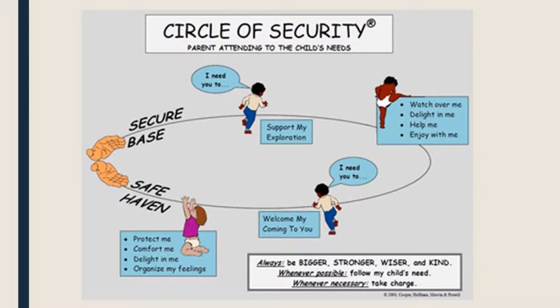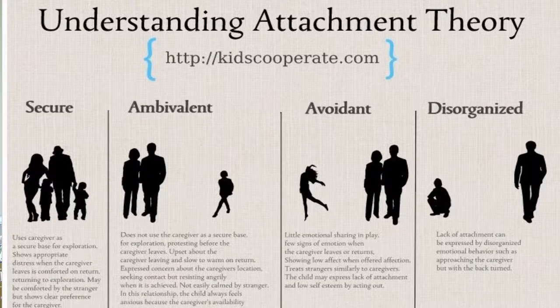With secure attachment, children will go explore and check back in — using their caregiver as a secure base to explore their environment, checking back in occasionally. The resistant/ambivalent attachment style is characterized by intense distress when the mother leaves, and the child approaches the parent but often pushes the parent away at the same time.